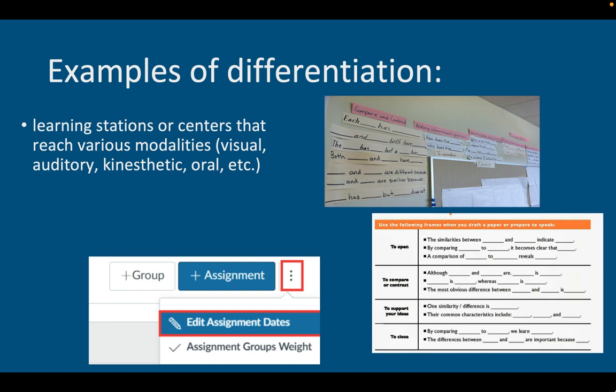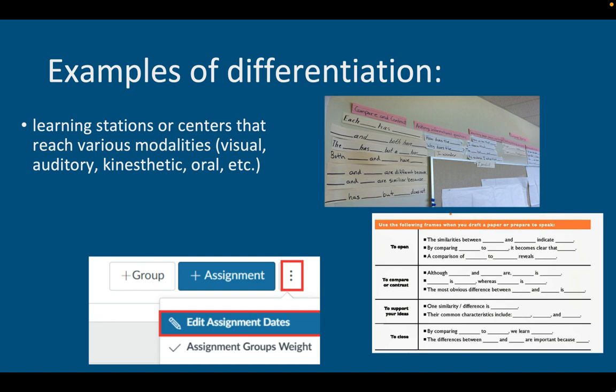Other examples of differentiation include learning stations or centers that reach various modalities. This may include visual, auditory, kinesthetic, or oral modalities. Some stations may be collaborative or have independent work with embedded metacognitive activities, where others may be focused on explicit instruction.